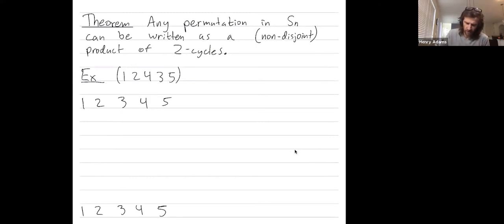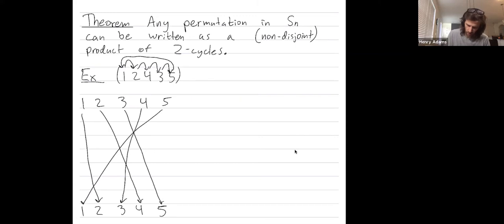It sends 1 to 2, 2 to 4, 4 to 3, 3 to 5, and finally 5 all the way back to 1. There it is. Looks like a perfectly good permutation.